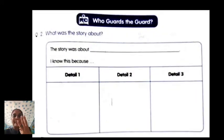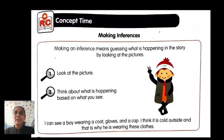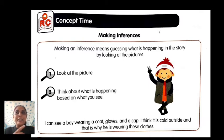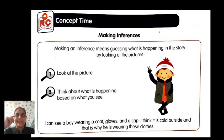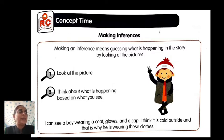Now my third topic to recap: finding the meaning of new words. How do we find the meaning of new words in stories? We look at the pictures and read the other words in the sentence. If you don't know the meaning of a word, read the surrounding words in the sentence so you can understand. Read the words nearby to understand the meaning of the new word. That is how you find the meaning of any new word.